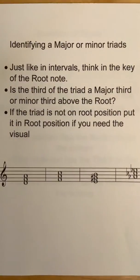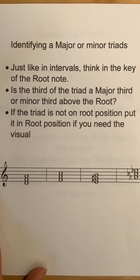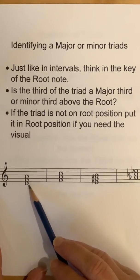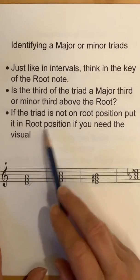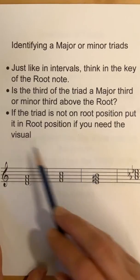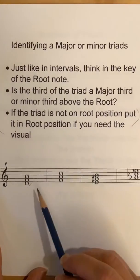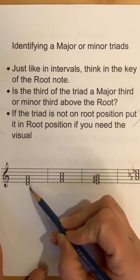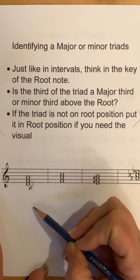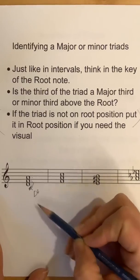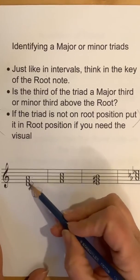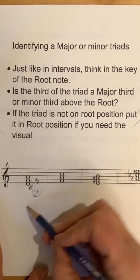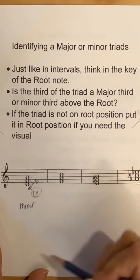To identify a major or minor triad, just like intervals, think in the key of the root. Ask yourself: is the third of the triad above the root a major or minor third? If the triad's not in root position, put it in root position if you need that visual. We'll talk about inversions in a moment. Here's D, F, A — root, third, fifth. I'm thinking in D major: is F a major third above D, or a minor third? D major has an F sharp. That's an F natural — one half step lower. It's a minor third, so this is a minor triad: D, F, A.